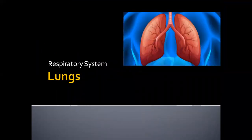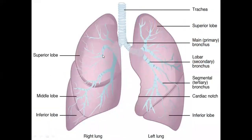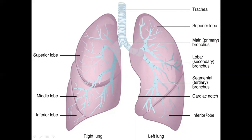The next important organ of the respiratory system is the lungs. There are two lungs: the right lung and the left lung. Looking at the different lobes, the right lung has three lobes — the superior lobe (upper), the middle lobe, and the inferior lobe. The left lung has two lobes: the superior lobe and the inferior lobe. The trachea branches off when it enters the lungs.